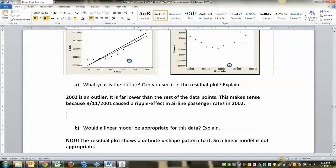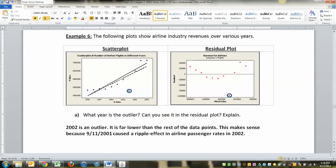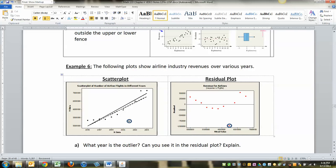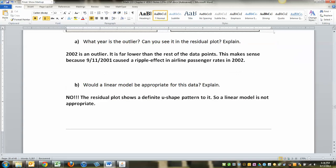Would a linear model be appropriate for this data? Oh, heck no. Remember that residual plots, you don't want to see a pattern like this. And if you take out that outlier, this is a total U shape. That's no good, right? There's definite U shape pattern. So a linear model is not appropriate.